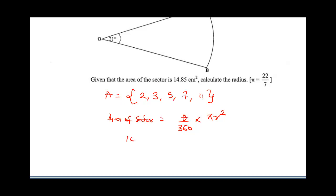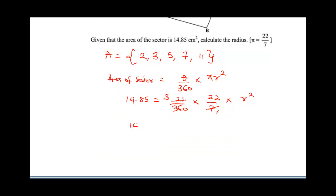We've been given the area of the sector as 14.85 equals 21 over 360 times pi, which is 22 over 7, times r squared. 7 in 21 is going to give us 3. So at this point, we'll have 14.85 equals 66 over 360 r squared.